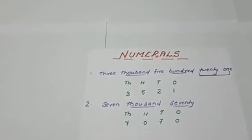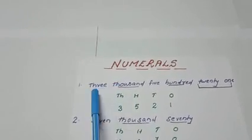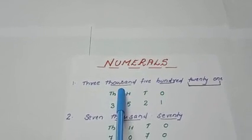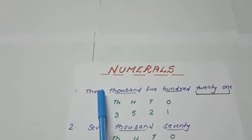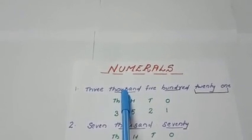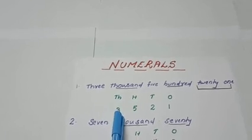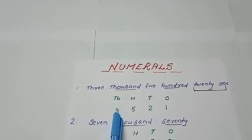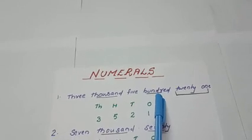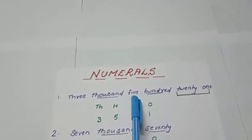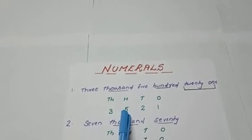Now I will split the number name while reading. When I read, I read 3000. I ask the question to myself: how many 1000s? The answer is 3000. So below the place 1000, I will write 3. Next, I will read it as 500. How many 100s here? 5. Under 100, I will write the number 5.